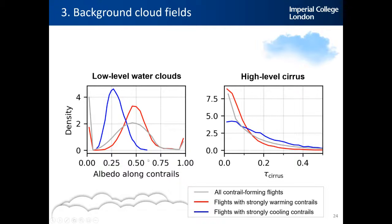In terms of the probability density function, the x-axis shows the albedo. A larger albedo indicates the presence of low-level water clouds or polar surfaces. Contrails forming above low-level clouds — captured by higher albedo values — tend to be warming. Contrails forming below high-level cirrus clouds — captured by the optical depth of the natural cirrus above the contrail (tau cirrus) — tend to be cooling.